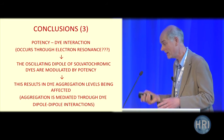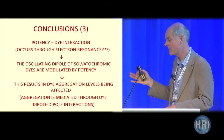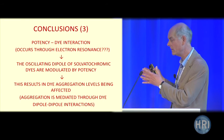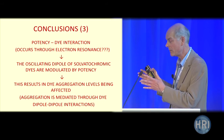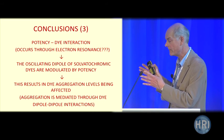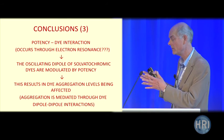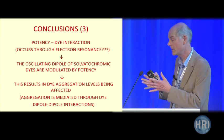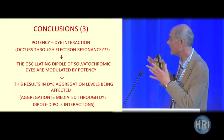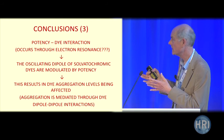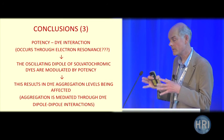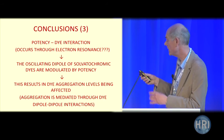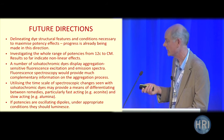Final conclusions: the potency-dye interaction occurs, possibly through electron resonance. The oscillating dipole of solvatochromic dyes is modulated by potency through this interaction, and if the dipole is affected, that always results in a change in aggregation levels — which is what we see as a shift in the spectra of the dyes.